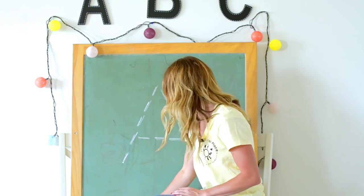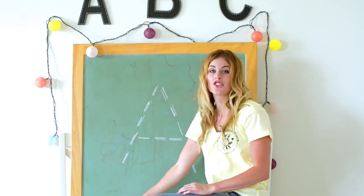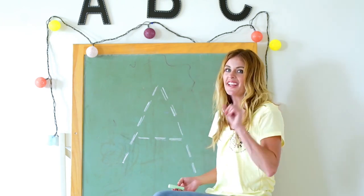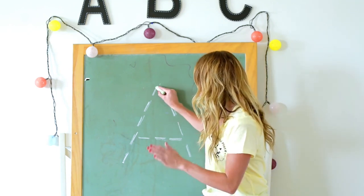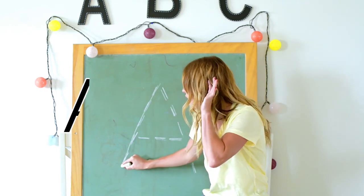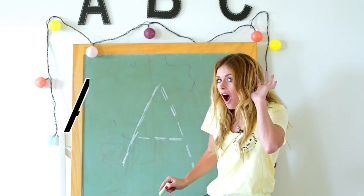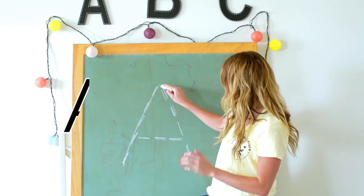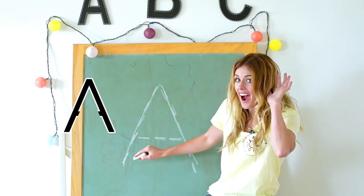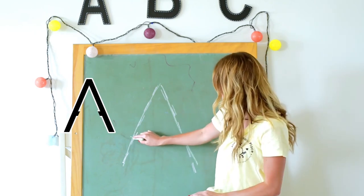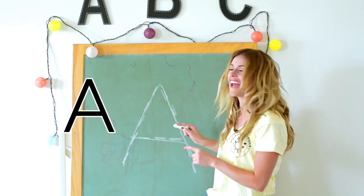I'm going to write it on the chalkboard — can you help me? Slant down, slant down, across A.